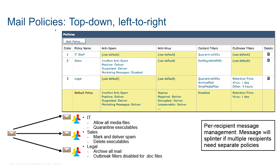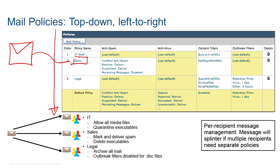The mail policies are meant to be read top-down. When we receive an email, it will be addressed to a recipient or from a sender. We'll cover in more detail in the next lecture how we decide which policy an email should match. Let's say this email matches with Sales — once it matches one policy, that email will be filtered according to the rules from left to right.